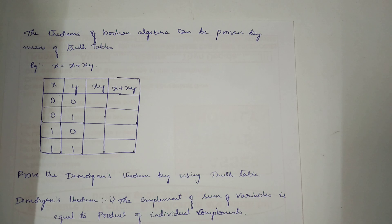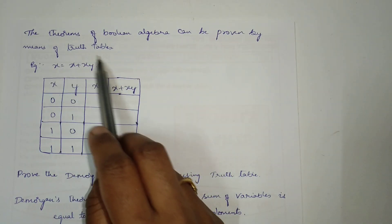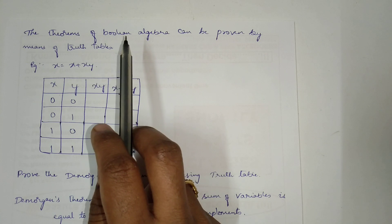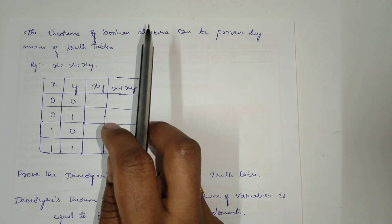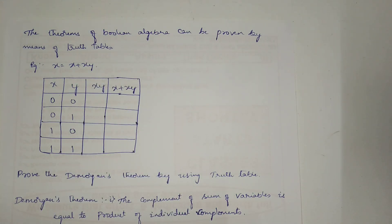It is according to the VTU 2022 Scheme. In the last video, we tried solving some problems, proving sum identities using other identities. Even in the examination, they may ask you to prove some expressions or Boolean theorems by using the truth table. I will show you how to do that.